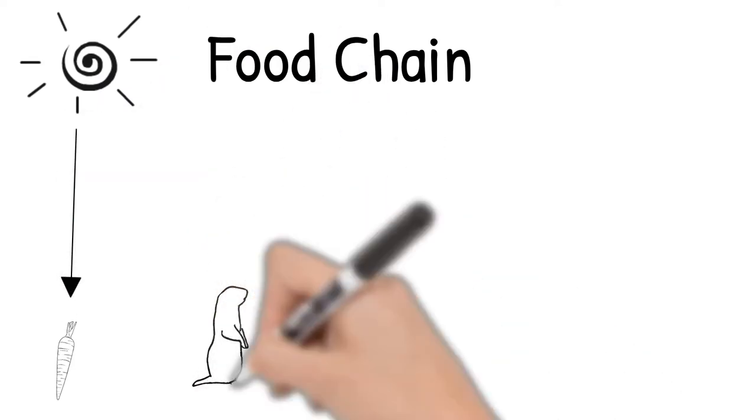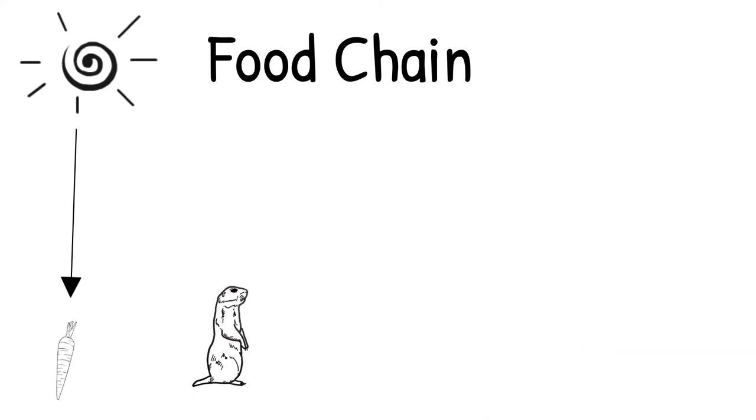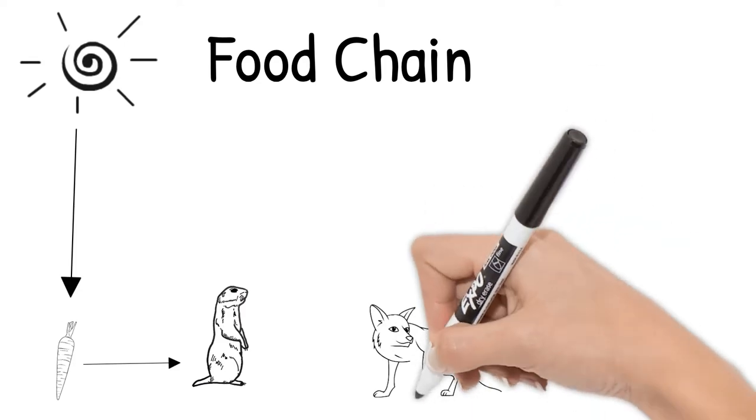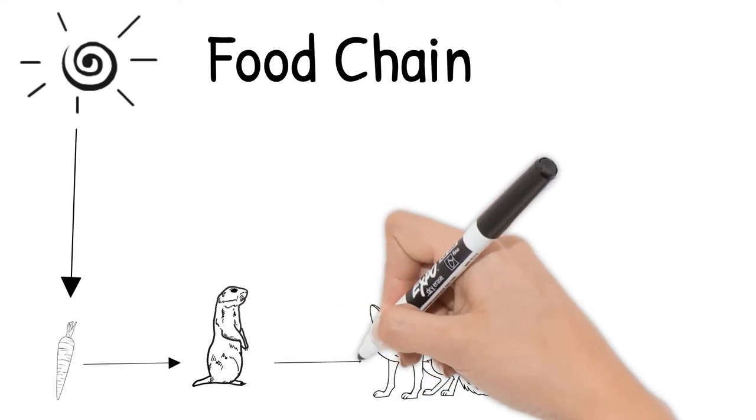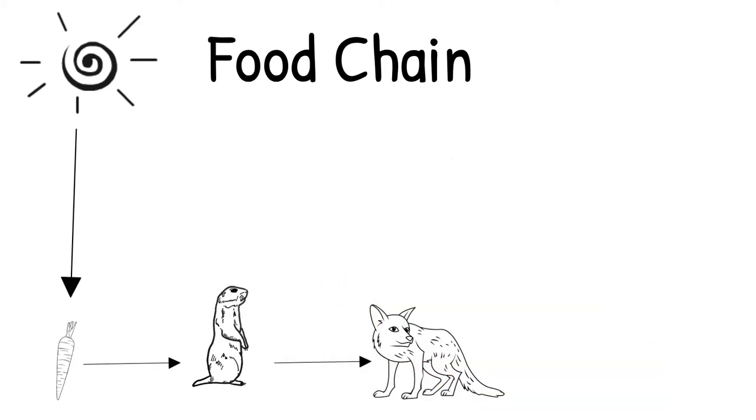Next, a gopher, which is a herbivore, is going to eat our carrot and get the energy. A fox is an example of an omnivore and will eat gophers, gaining energy from them.